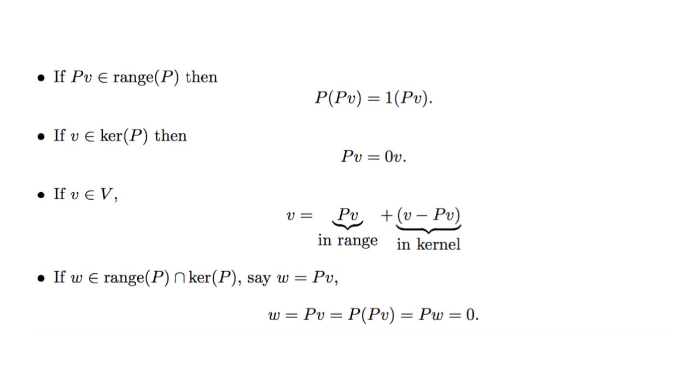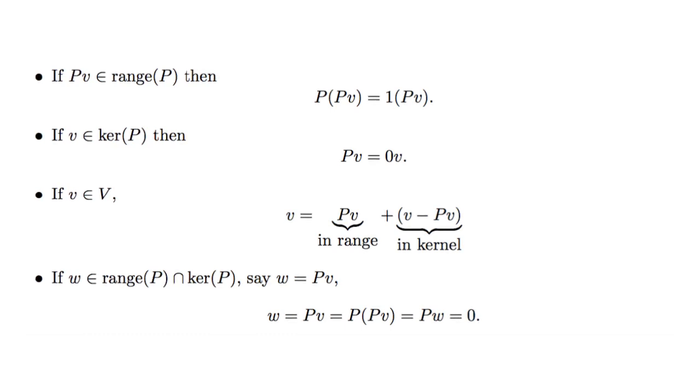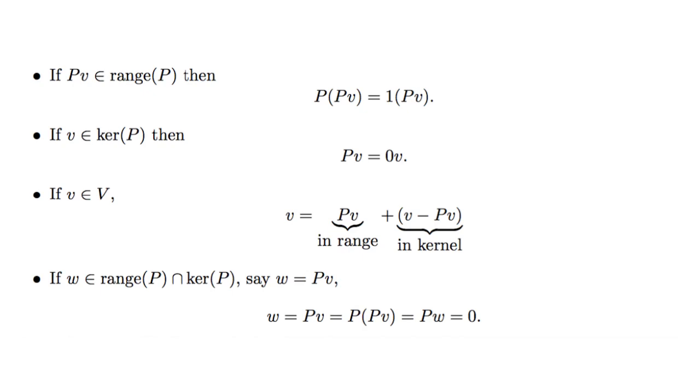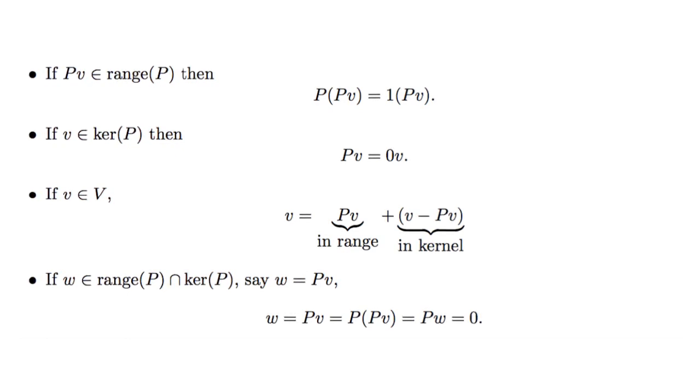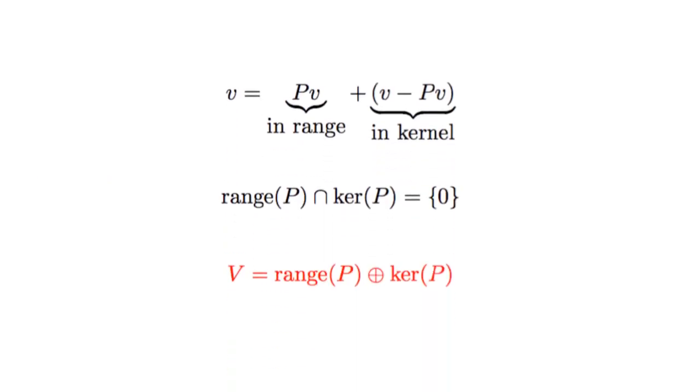But more interestingly, any vector can be written as a sum of something in the range and the kernel, as we see here. And at the same time, if a vector is in the range and the kernel, it has to actually be the zero vector. If something like a vector w is in the range as Pv, then that's actually P squared v, which is P times w, which is zero.